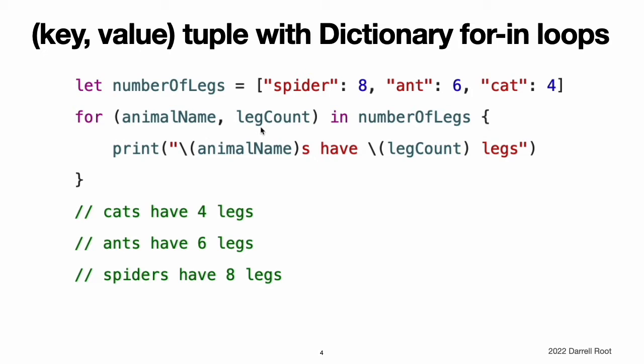In this code example, the dictionary's keys are decomposed into a constant called animal name, and the dictionary's values are decomposed into a constant called leg count. The contents of a dictionary are inherently unordered, and iterating over them does not guarantee the order in which they will be retrieved. The order you insert items into a dictionary does not define the order they are iterated. For more about arrays and dictionaries, see collection types.